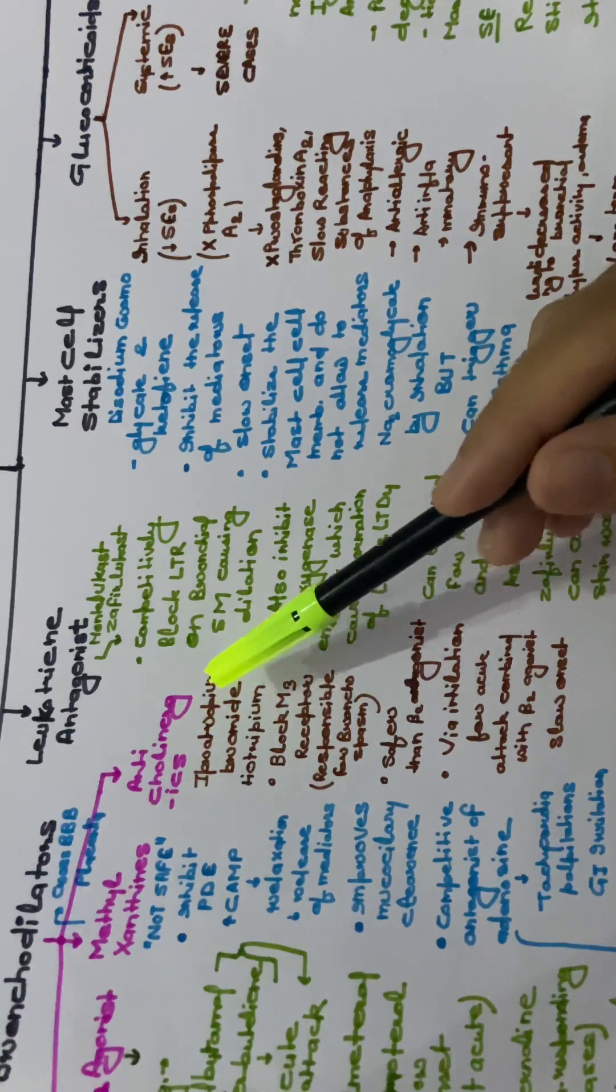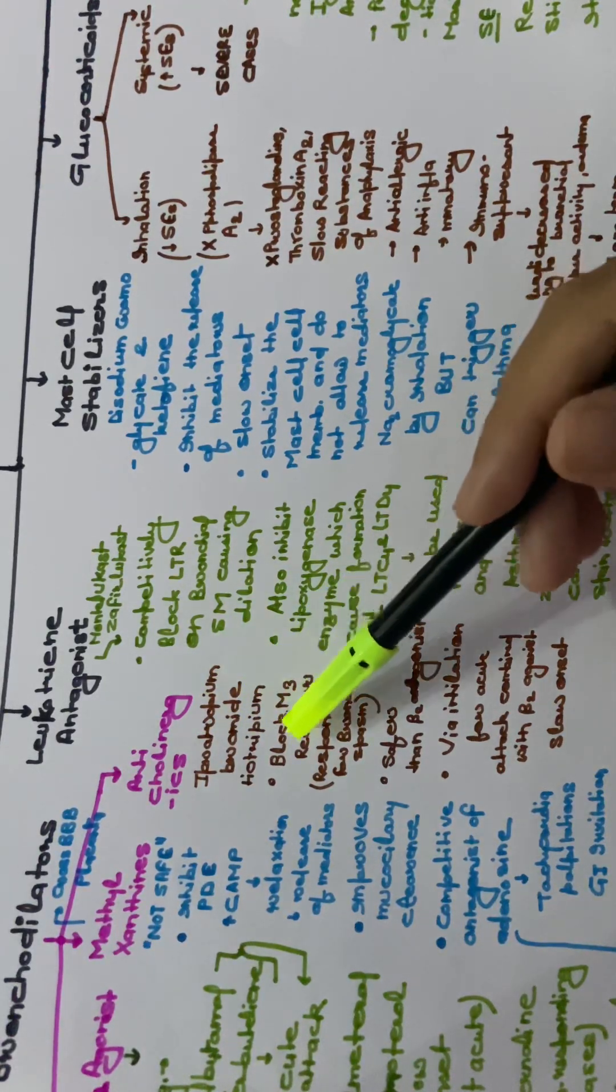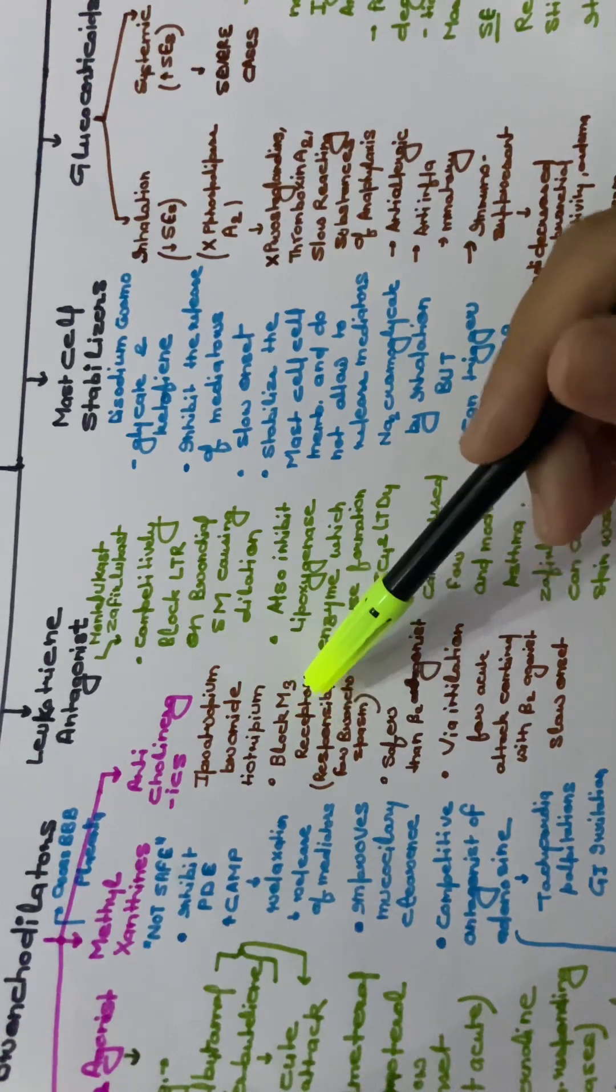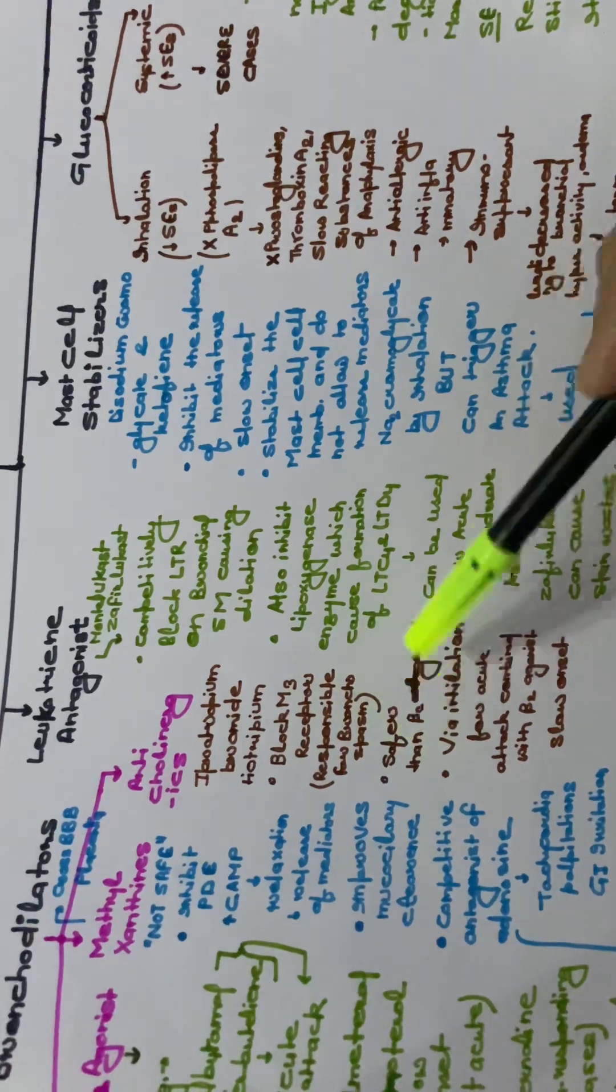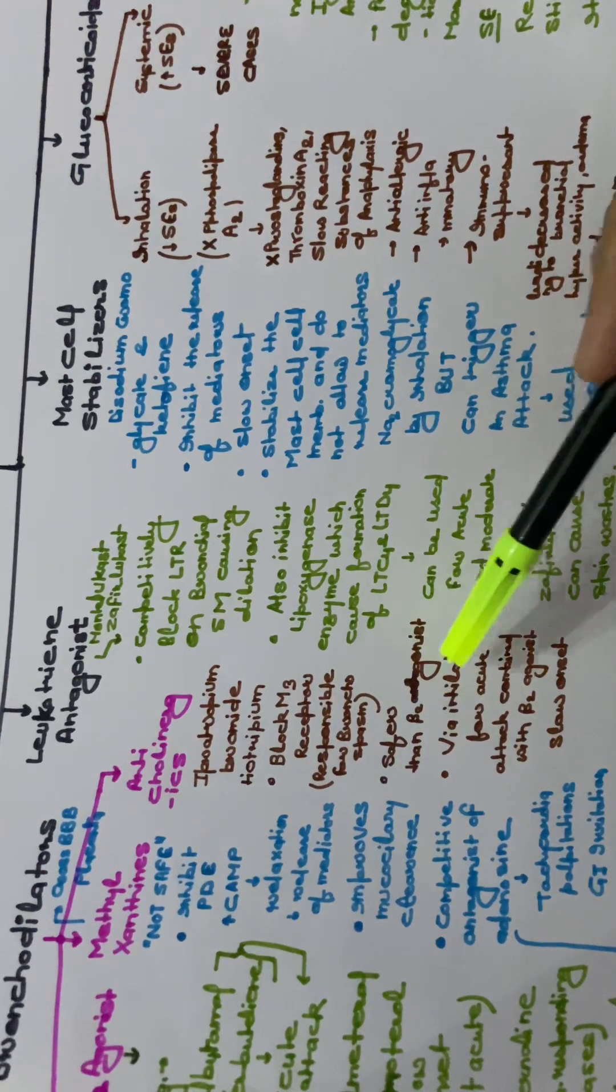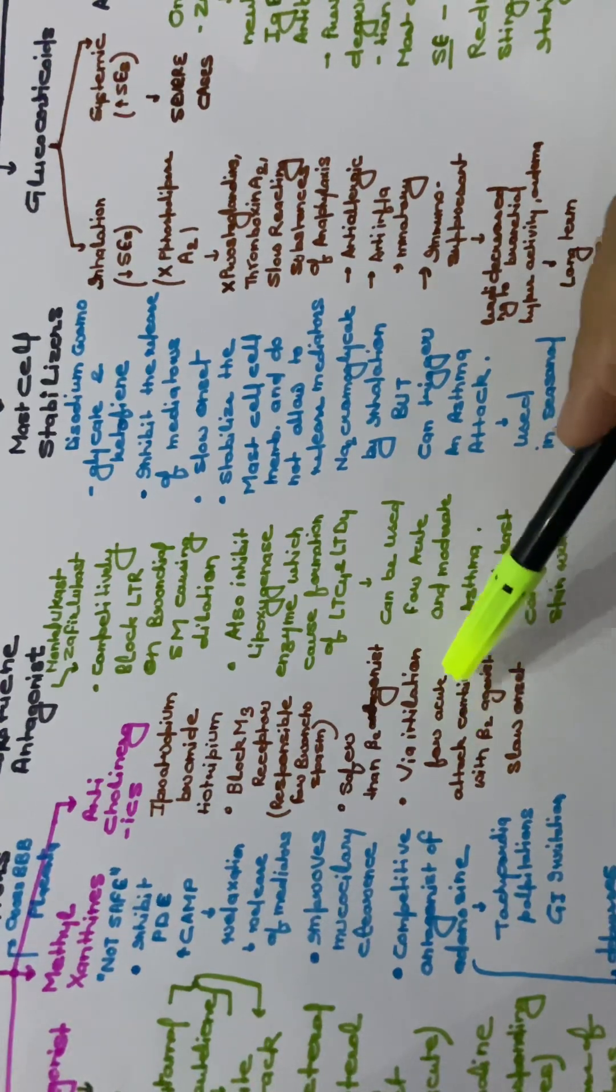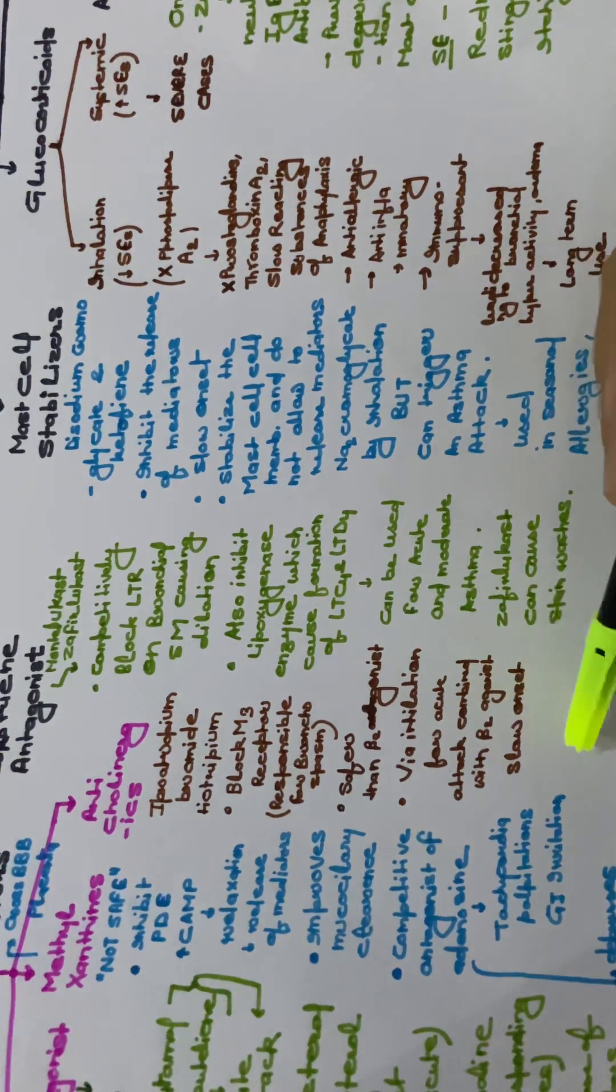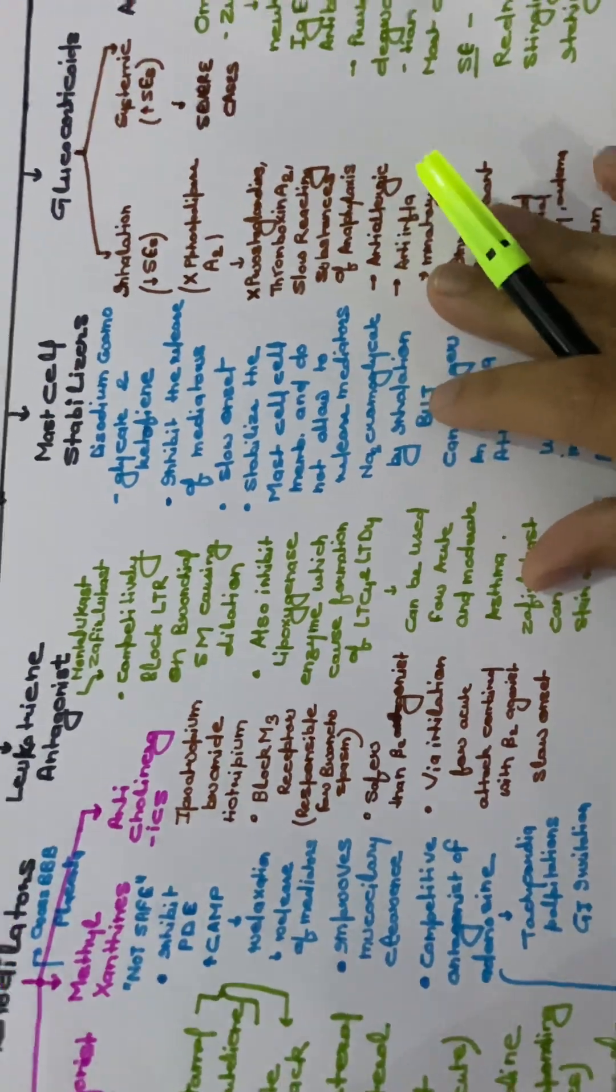Anticholinergics are ipratropium bromide and tiotropium. They block M3 receptors which are responsible for bronchospasm, safer than beta-2 agonist. They can be taken by inhalation for acute attack combined with beta-2 agonist and their onset is slow.